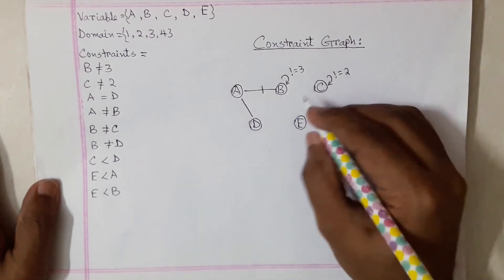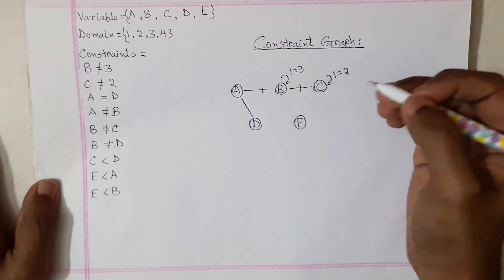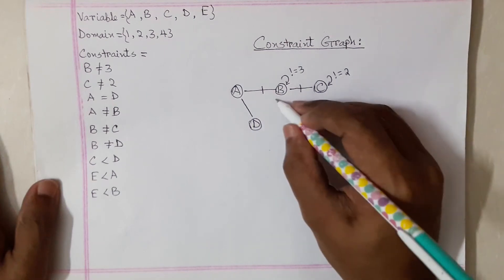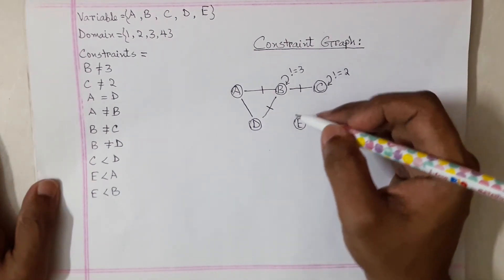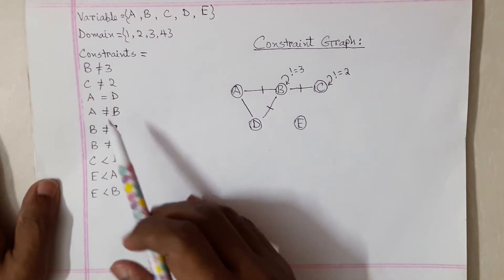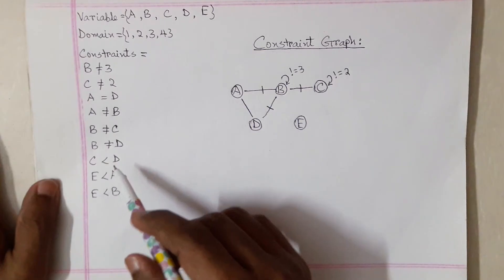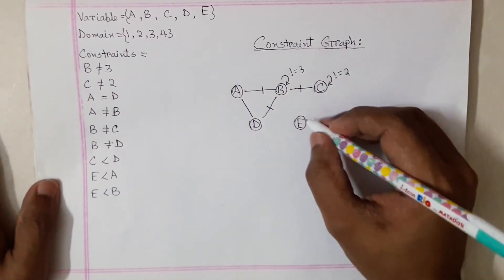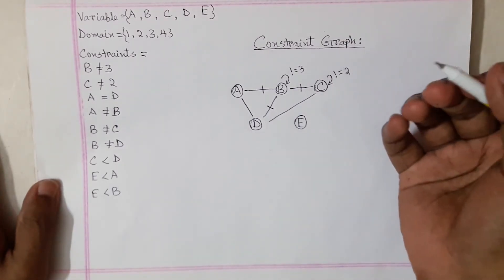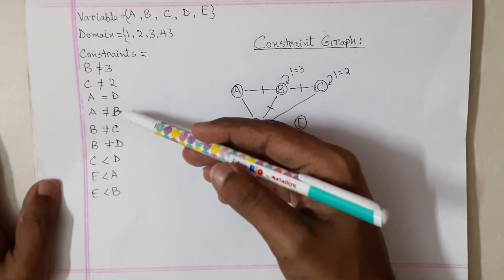B not equals c — same thing, add a line with a small tick mark between them. Same for b not equals d — add another line between those two nodes. For c not equals d, you connect c and d. Note that you handle equalities and inequalities the same way visually when drawing the edges between nodes.